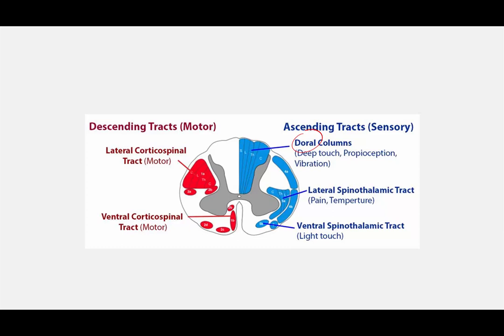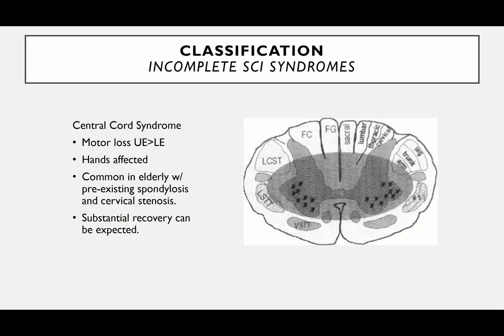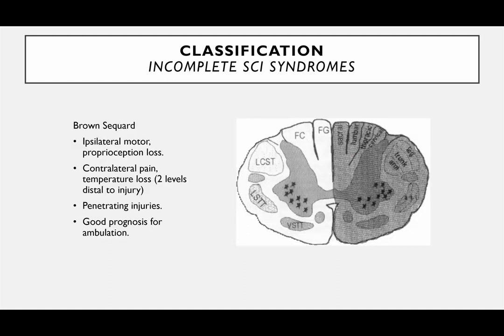You have sensory and motor tracts in different areas of the spinal cord. Depending on where your insult is, you're going to get a different type of incomplete spinal cord injury. For example, the central cord syndrome — shown by the shaded area in the center — happens in elderly patients with preexisting spondylosis. They have a predilection to upper extremity motor loss, and these patients can actually do okay with treatment.